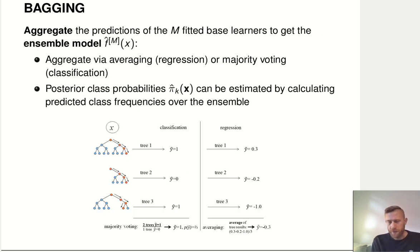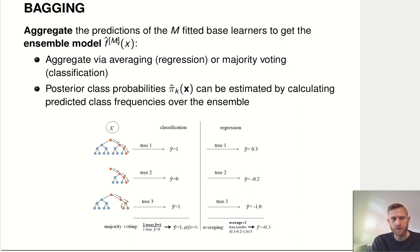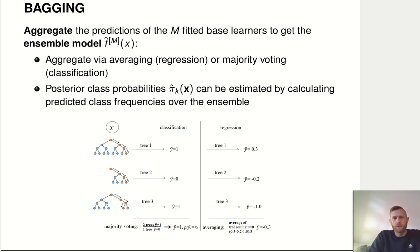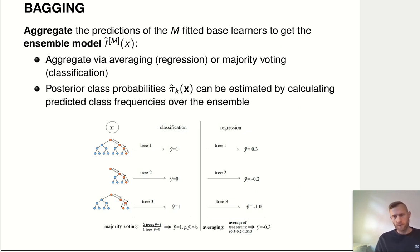Once we've done that, we aggregate — we combine the predictions of these M fitted models to get an ensemble model, which we'll call F-hat with a superscript capital M, to indicate it comes from combining capital M different base learner models. If we do regression, we do this aggregation by simply averaging the predictions of the different ensemble members. In classification, we typically do majority voting, and we can get posterior class probabilities by estimating the relative frequencies of the predictions that the ensemble members give.